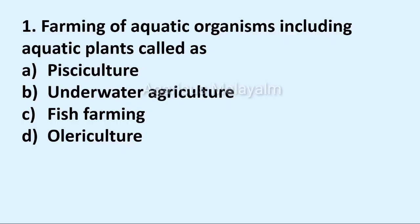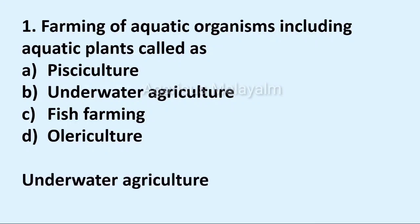First question: Farming of aquatic organisms including aquatic plants is called as — Answer options: Option A PC Culture, Option B Underwater Agriculture, Option C Fish Farming, Option D Already Culture. Correct answer: Option B Underwater Agriculture, also known as Aquaculture.